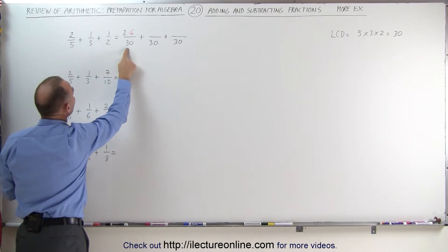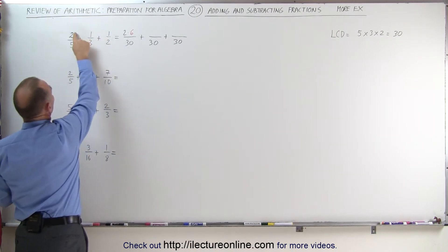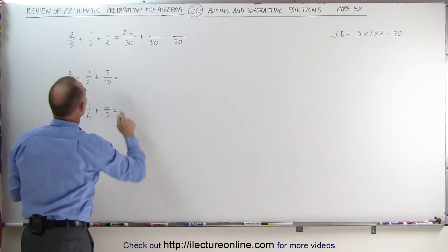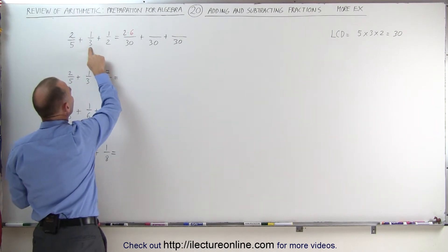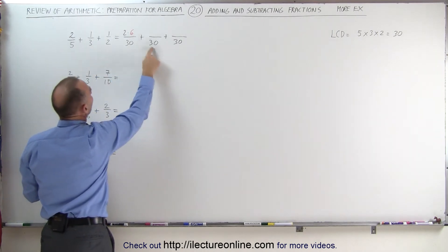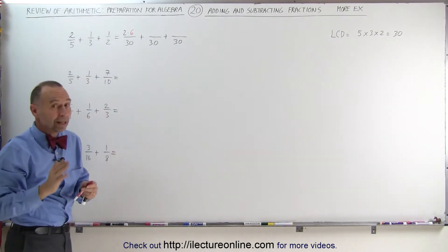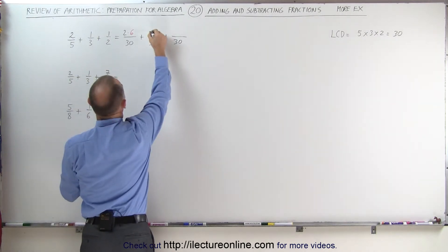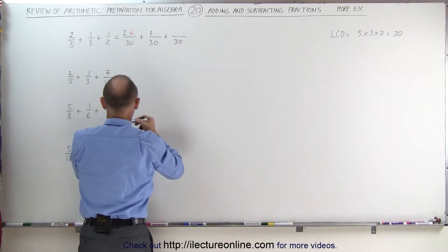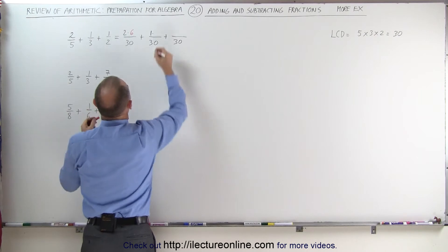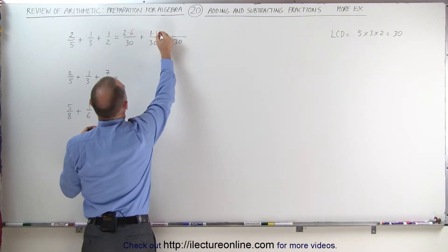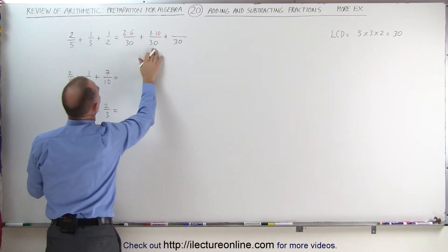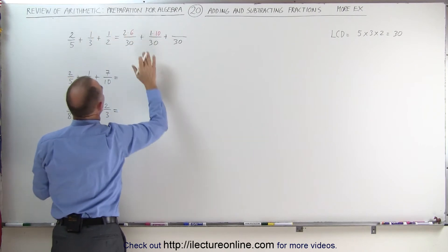5 times 6 is 30, therefore I must also multiply the numerator by 6 to get 30. What about 3? I have to multiply 3 times 10 to get 30, which means I also have to multiply the numerator by 10 to get 30 as well. So 1 times 10 — we multiply the denominator times 10, we must multiply the numerator times 10.